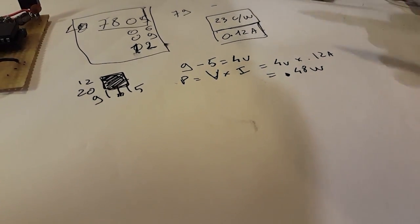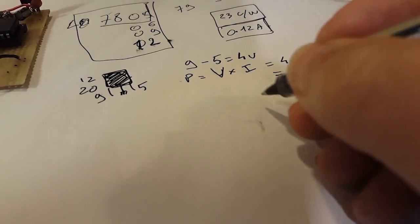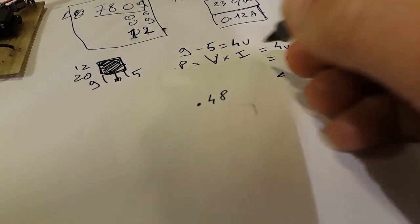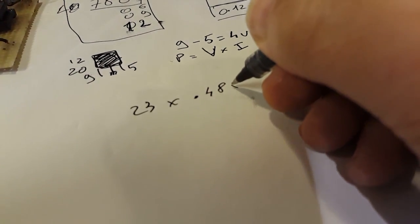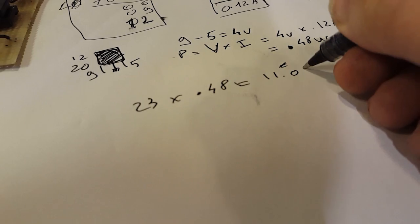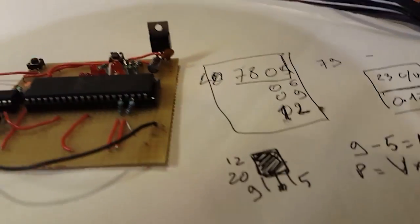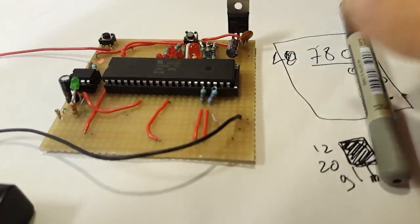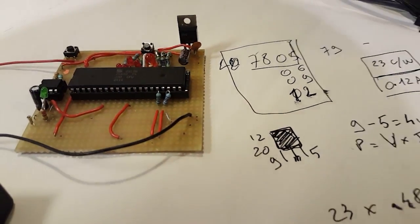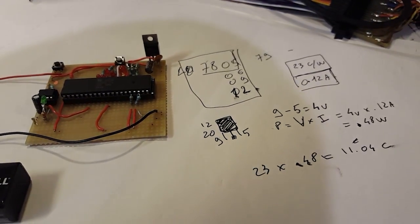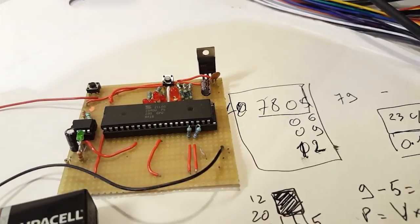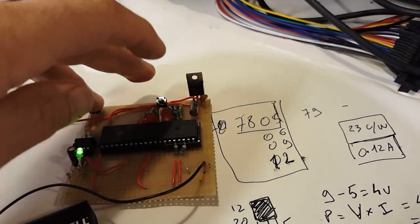Because it's Celsius per watt, we multiply 0.48 by 23, and what we get is 11.04 degrees Celsius. So there's an increase of 11 degrees Celsius when we have this on. It's not enough to fry our component - it's well within specs. This also means we won't need a voltage regulator.